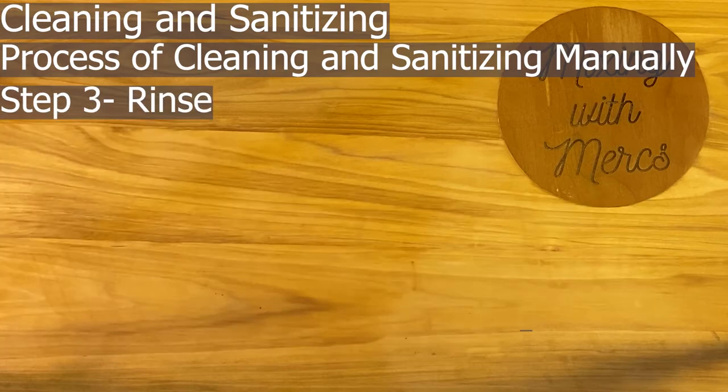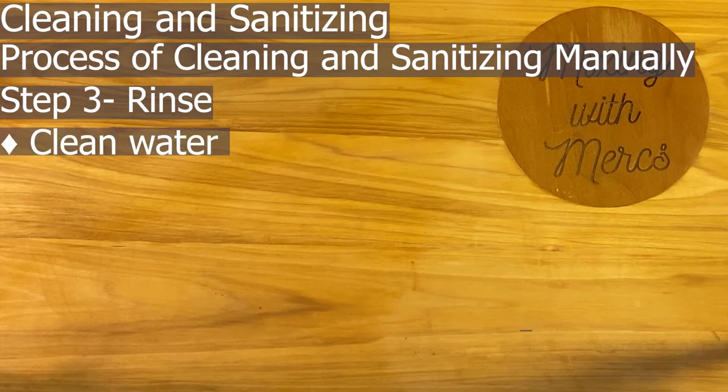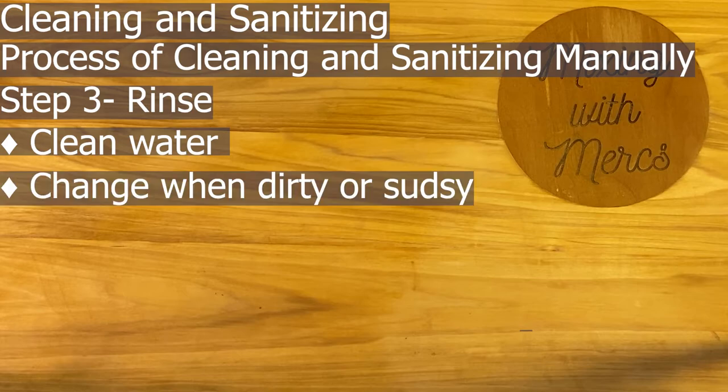Step three is to rinse, using clean water. If you're washing in a sink, fill the second sink with clean water and dip the dishes in, moving them around to make sure there are no more suds. Change out that water whenever it gets dirty, sudsy, or you realize it's not rinsing things well anymore.